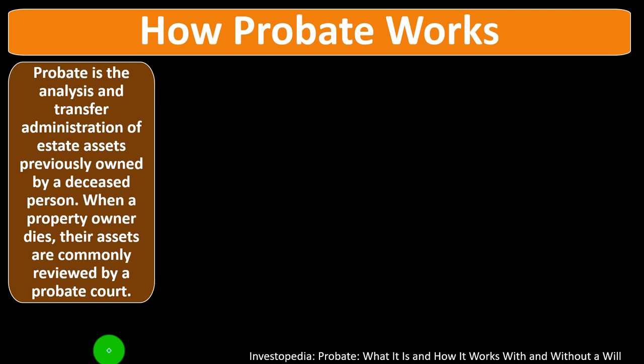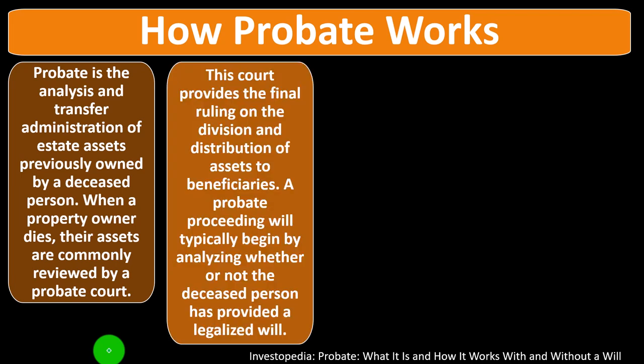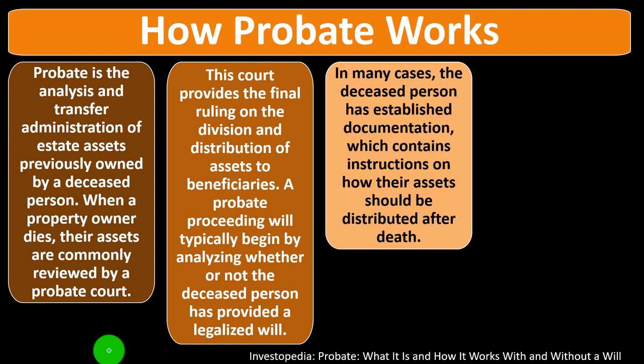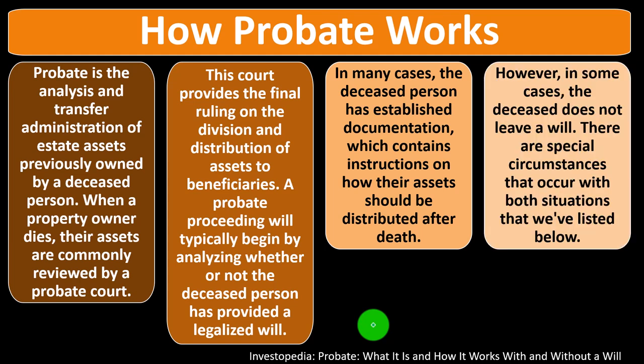How probate works: Probate is the analysis and transfer administration of estate assets previously owned by a deceased person. When a property owner dies, their assets are commonly reviewed by a probate court, which provides the final ruling on the division and distribution of assets to beneficiaries. A probate proceeding will typically begin by analyzing whether or not the deceased person has provided a legalized will. In many cases, the deceased has established documentation with instructions on how assets should be distributed after death. However, in some cases, the deceased does not leave a will.